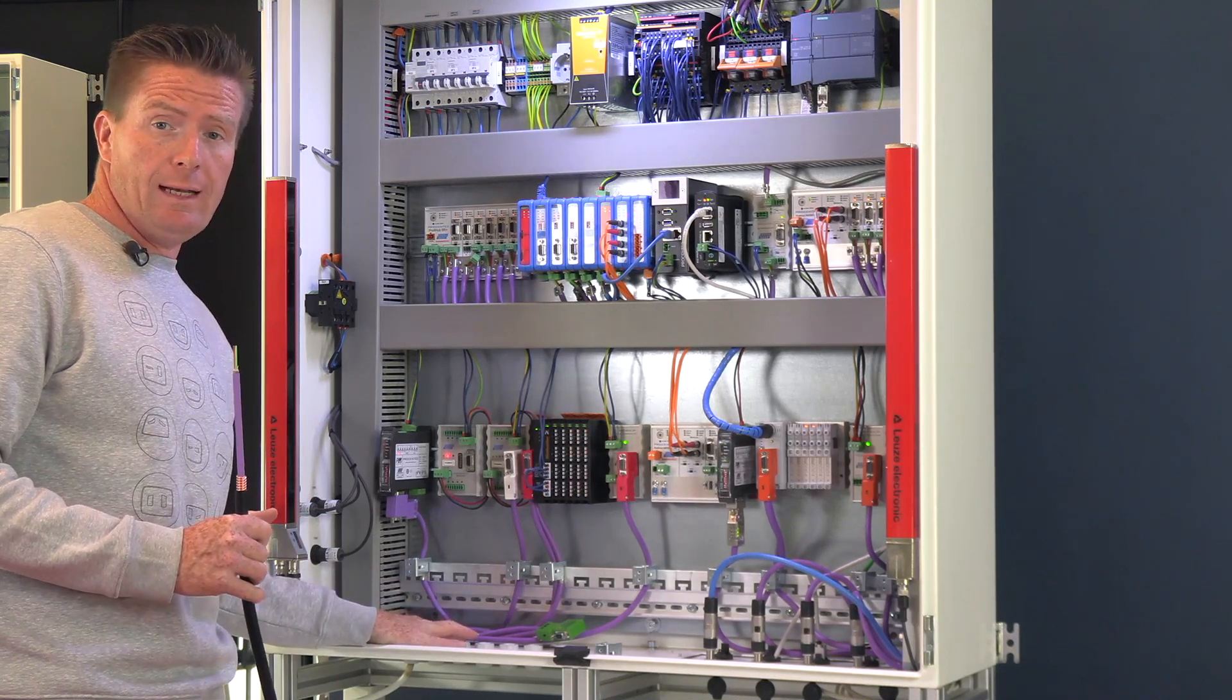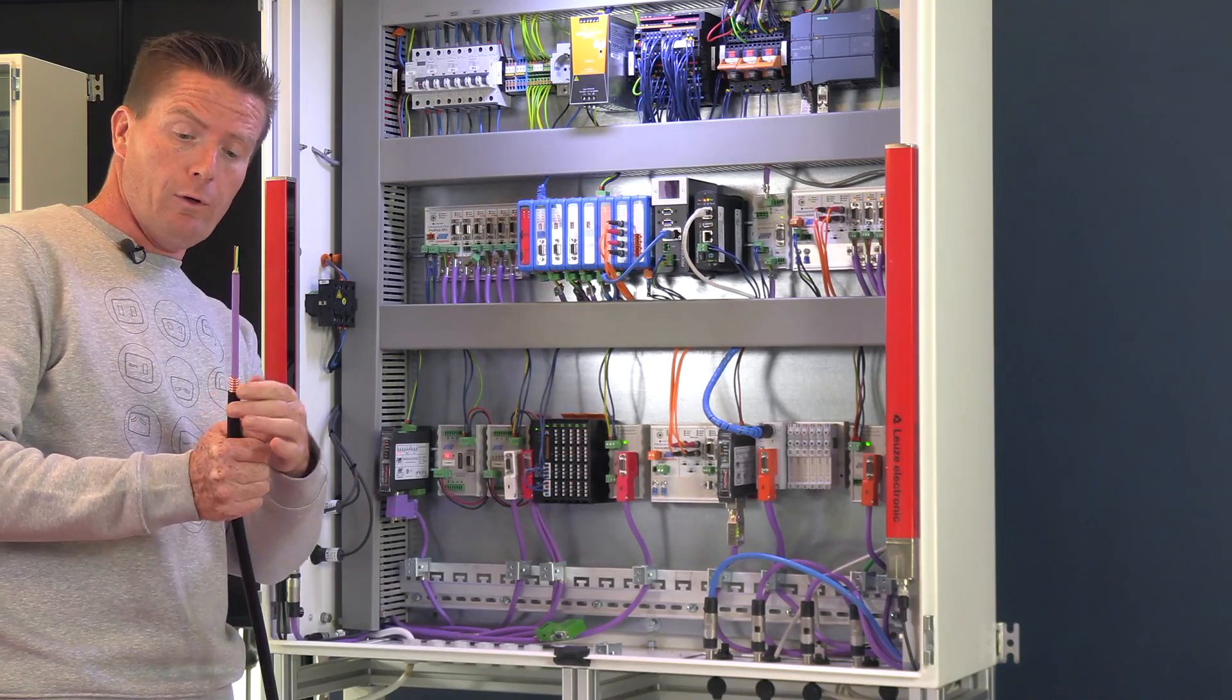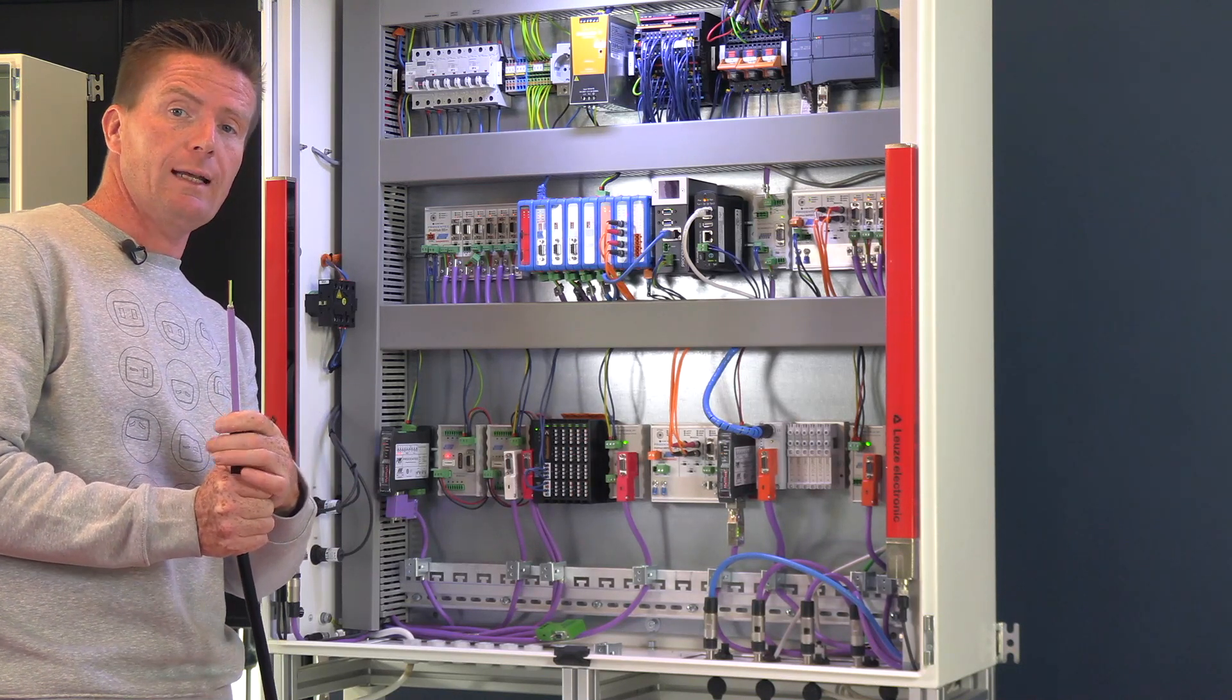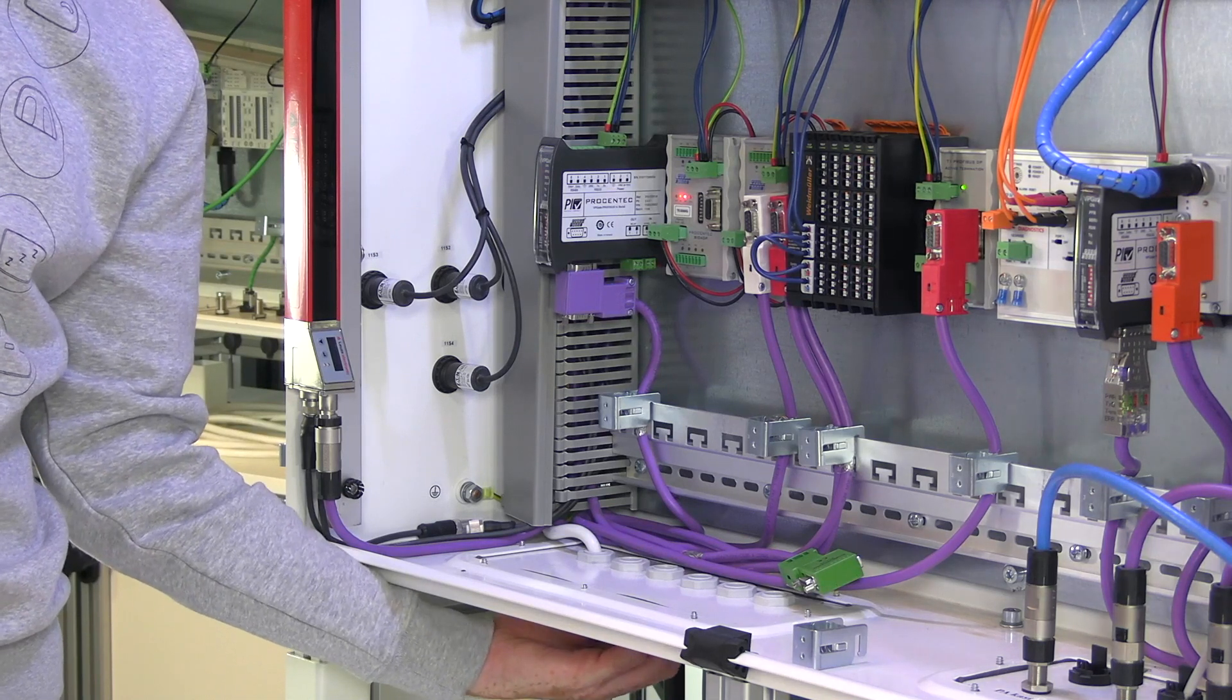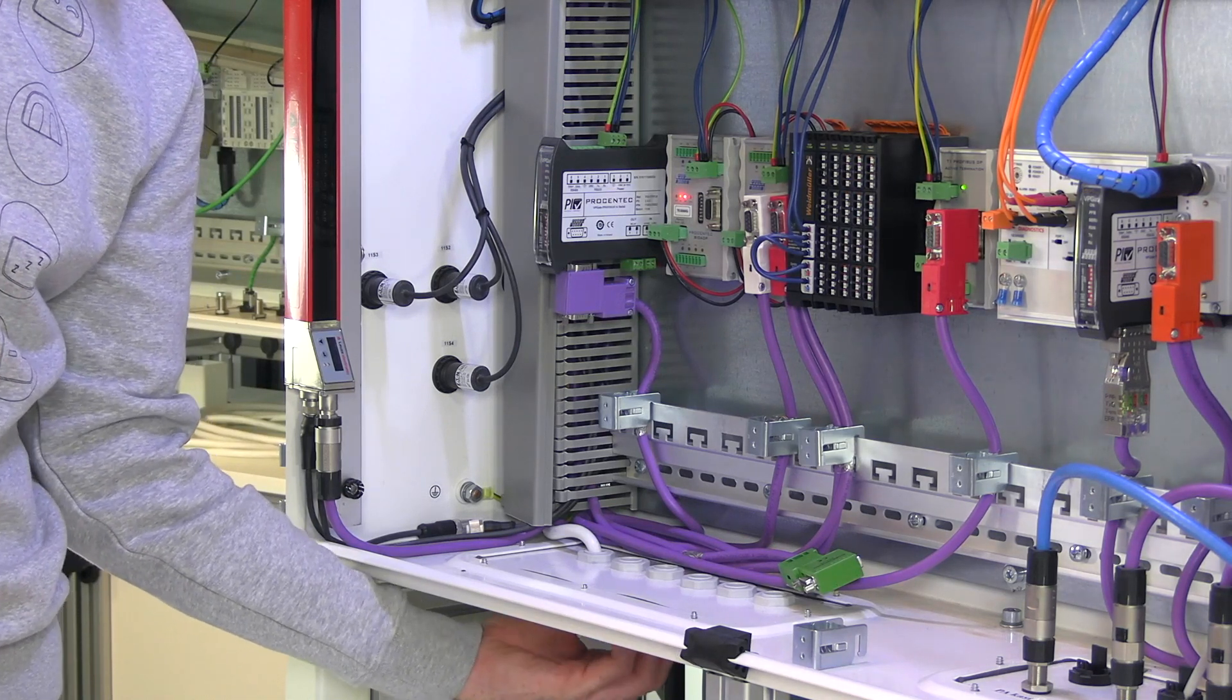If you've got an EMC gland, you can directly mount your extra copper tube into this EMC gland. I don't have those, so I will mount my copper to the ground rail.